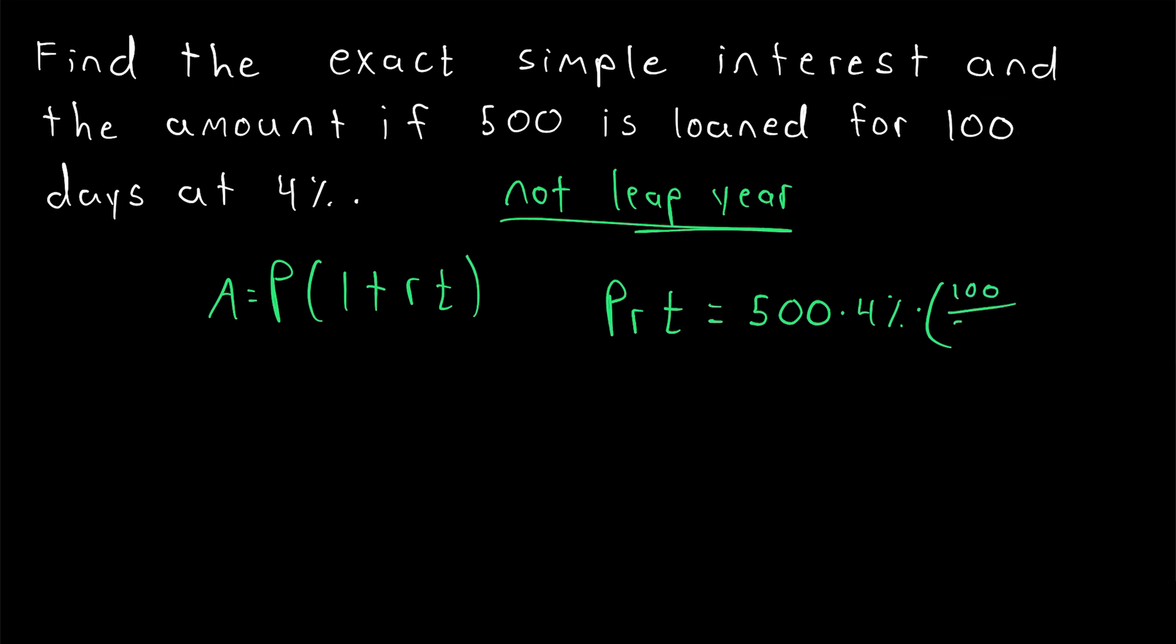100, divided by 365. And this is approximately 5.48. So, that is the exact simple interest earned on the loan.